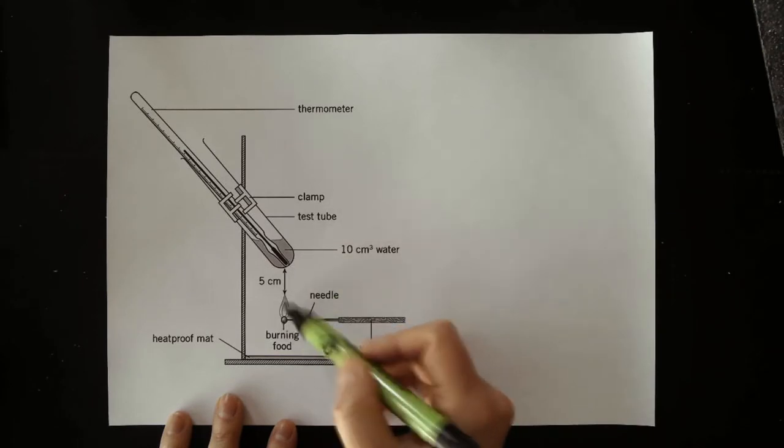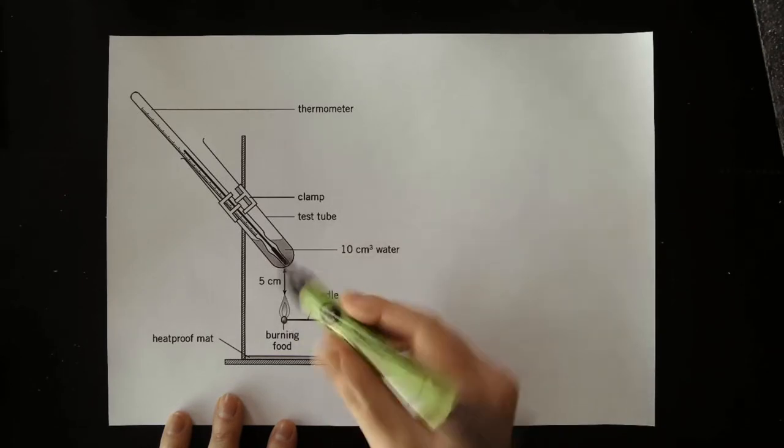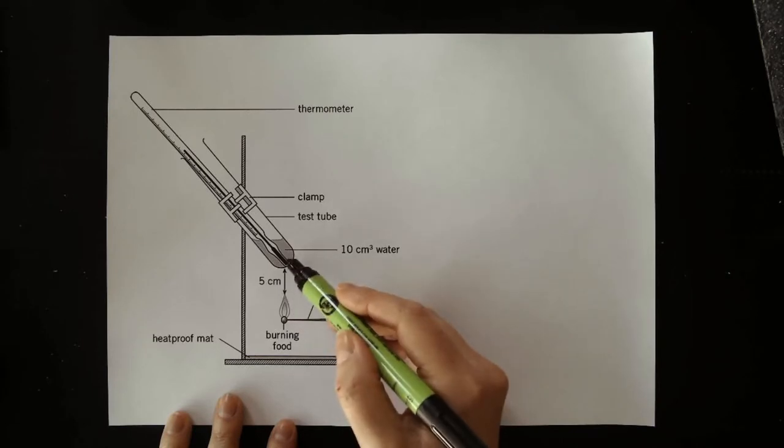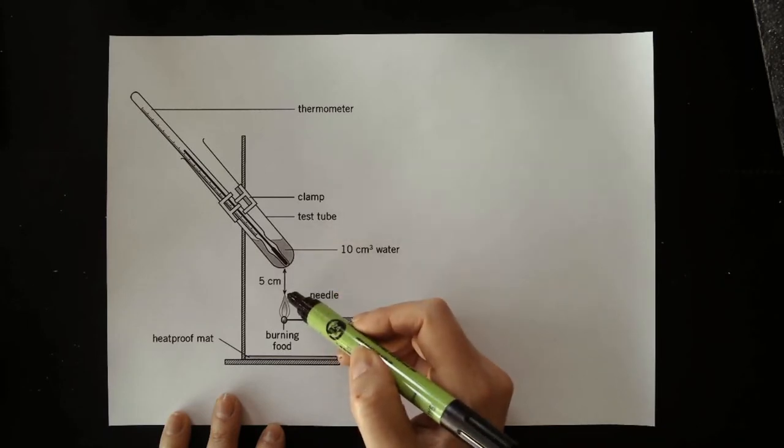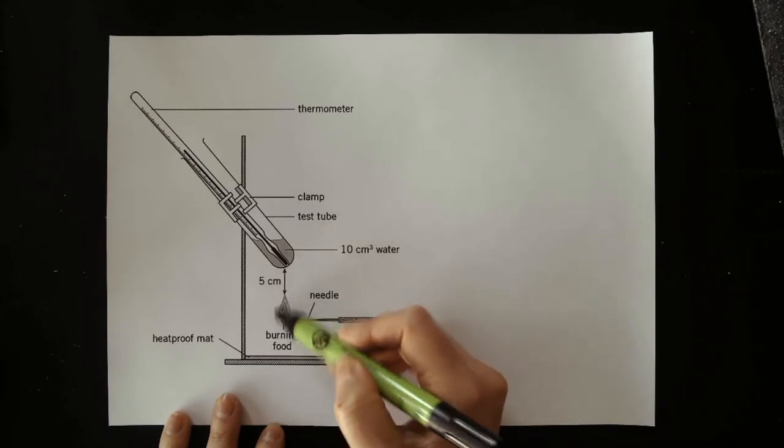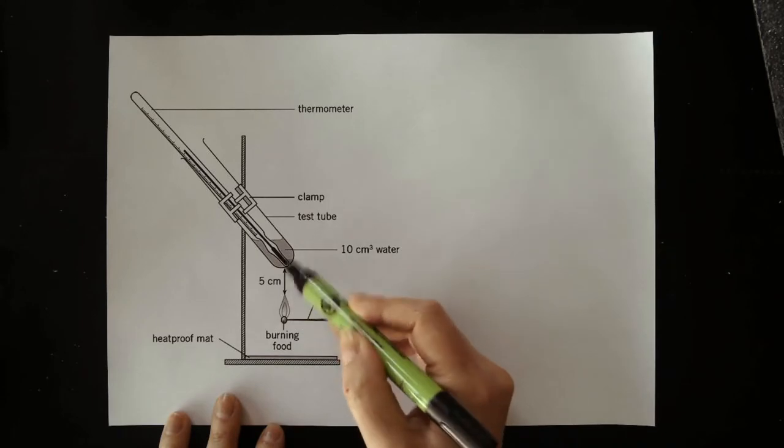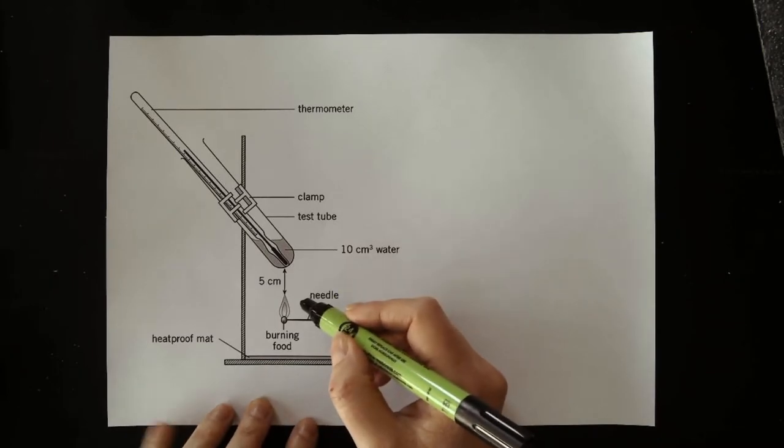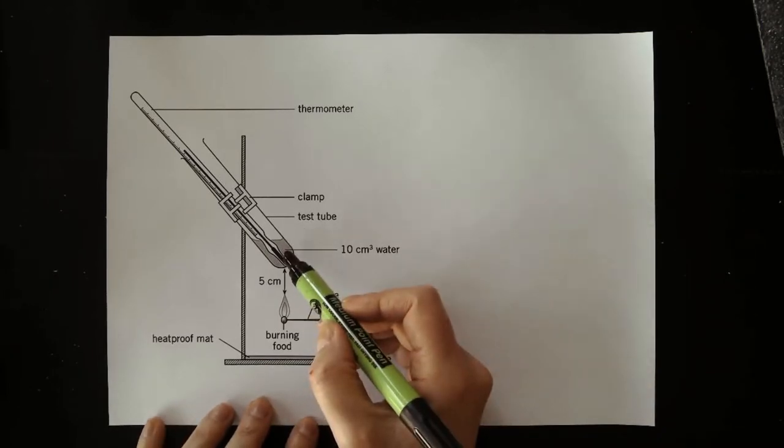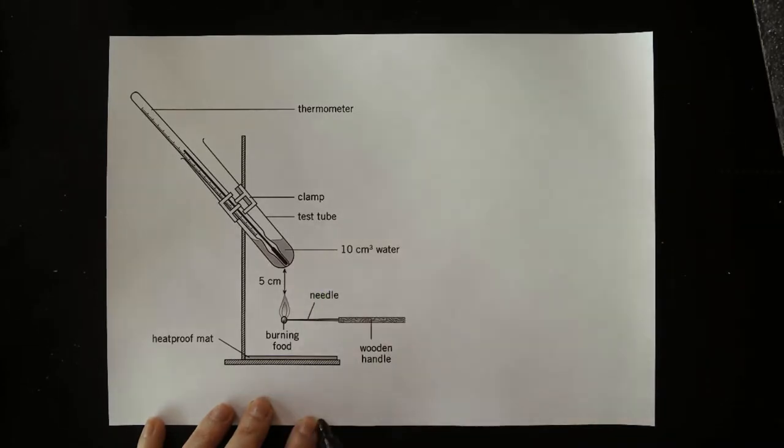The chemical energy in the crisp will be transferred using thermal energy to increase the thermal store of the water. So I want to know which crisp transfers the most thermal energy because that will tell me which crisp had the most chemical energy to start with. So I'm going to measure how hot this water gets for the different types of crisp.